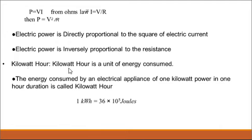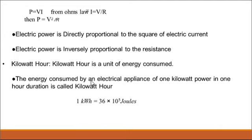Kilowatt hour is a unit of electrical energy consumed. Household appliances like AC, fridge, TV, and cooler consume energy in terms of kilowatt hours. The electrical bill depends on how much energy is consumed. The energy consumed by an electrical appliance of 1 kilowatt in 1 hour duration is called 1 kilowatt hour. 1 kilowatt hour is equal to 36 × 10⁵ joules.